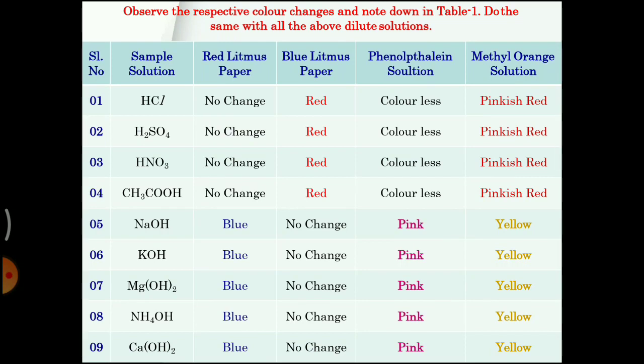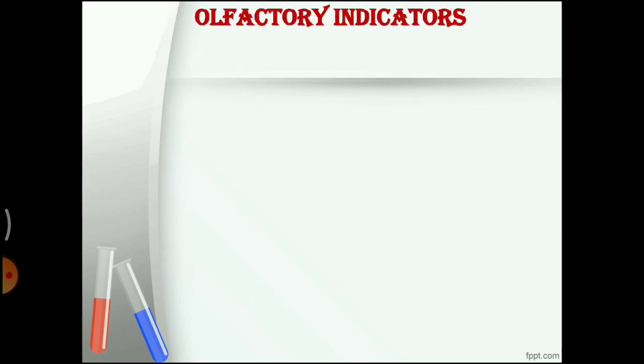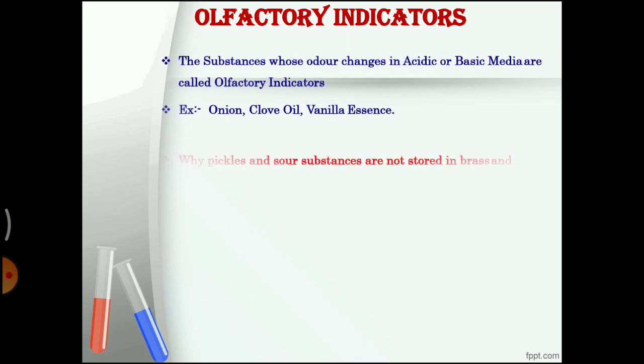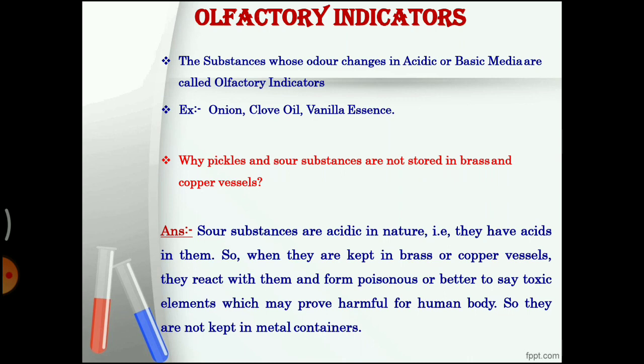There are some substances whose odor changes in acidic or basic media — these are called olfactory indicators. The substances whose odor changes in acidic or basic media are called olfactory indicators. Examples are onion, clove oil, and vanilla essence.